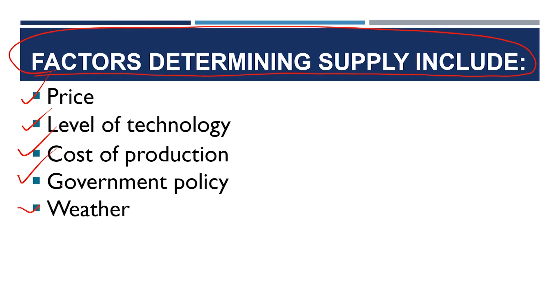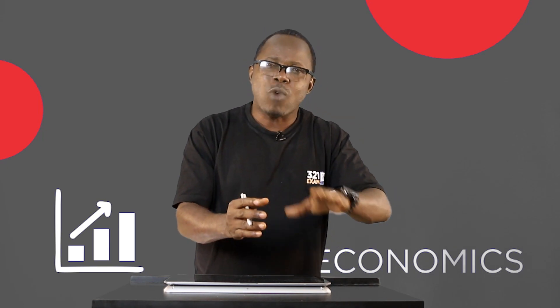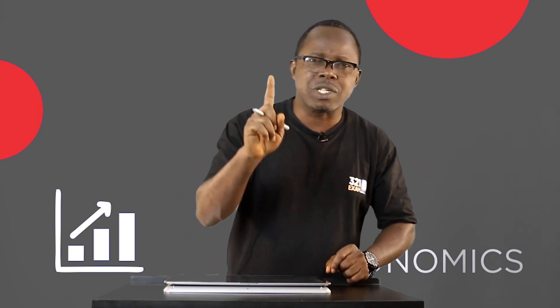Weather is another important factor that affects supply. Some commodities are supplied based on the season or weather. Nigeria has two main weather seasons — the dry season and the rainy season. During the rainy season, there is a harvest of crops, which encourages production. When there is abundance, weather makes the price of the commodity low. But when there is scarcity due to weather, the price of the commodity becomes high, cost of production increases, and the supply of goods and services decreases.